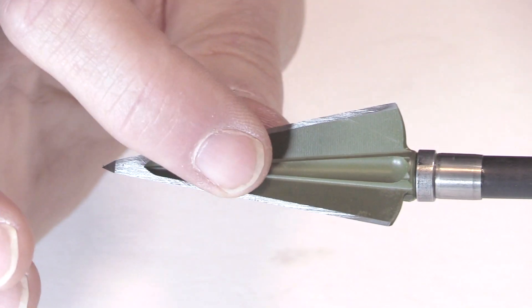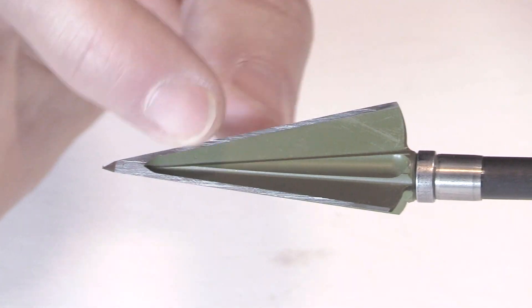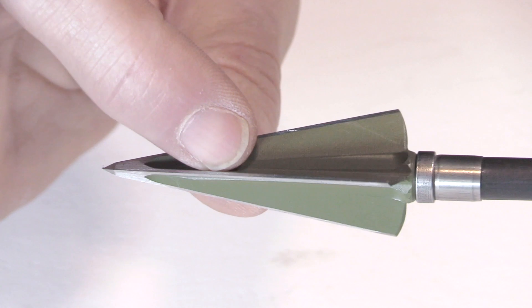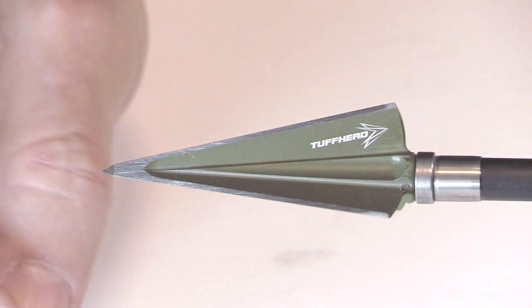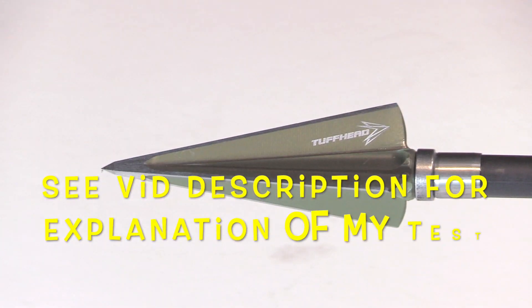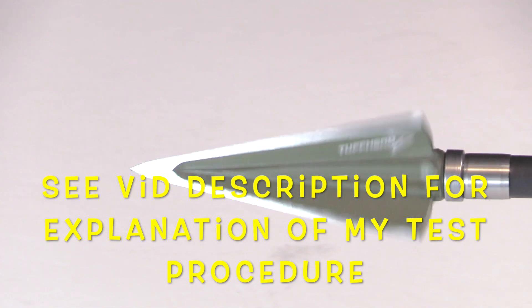And then you notice in the ferrule here, it's got this scoop design to the ferrule. And that's designed to aid in flight, as well as penetration, as well as to create a nice wound channel as it goes through an animal. So I'm really eager to put this head to the test and see how it performs.